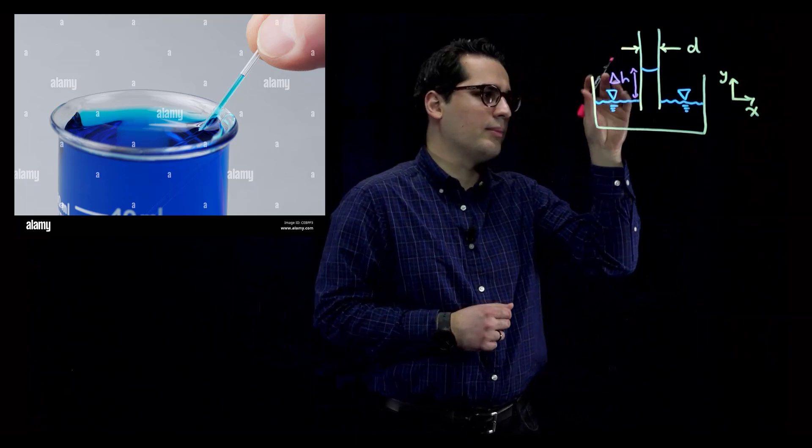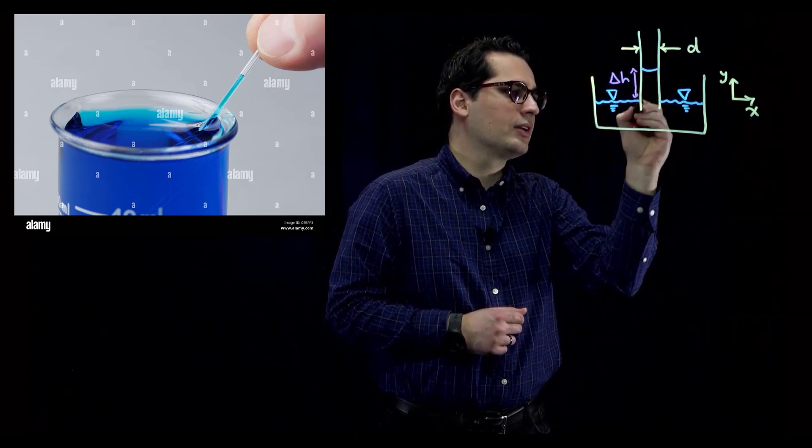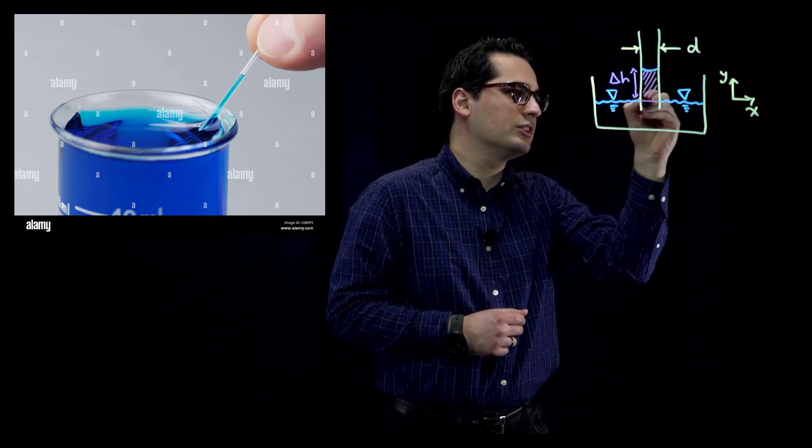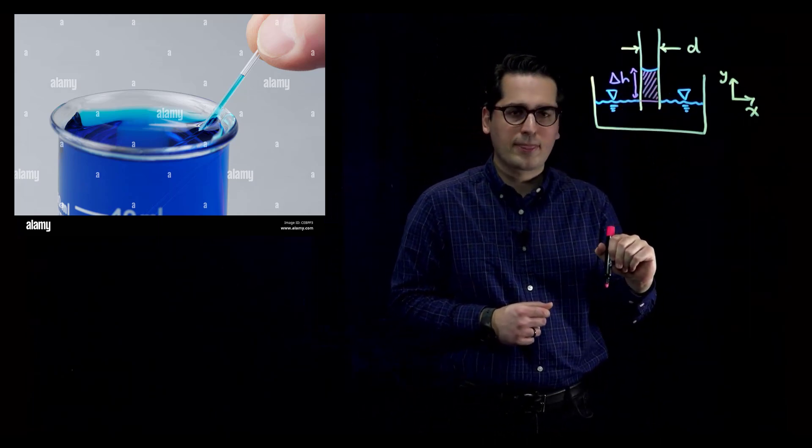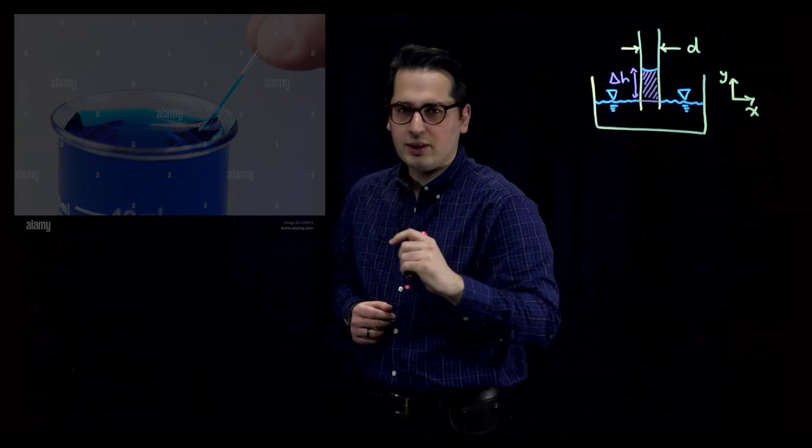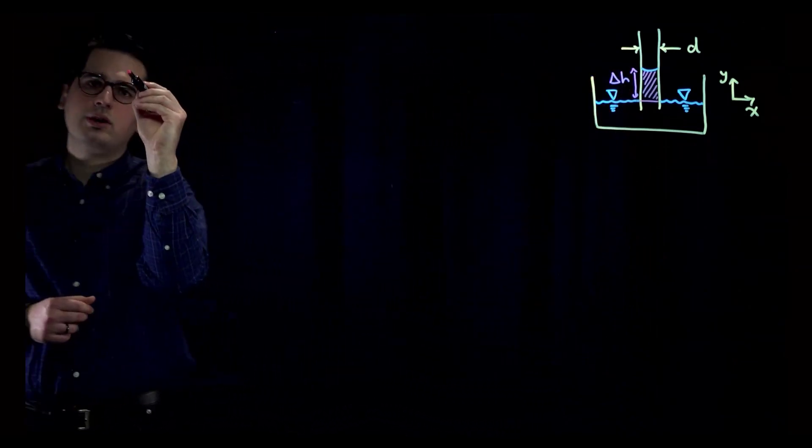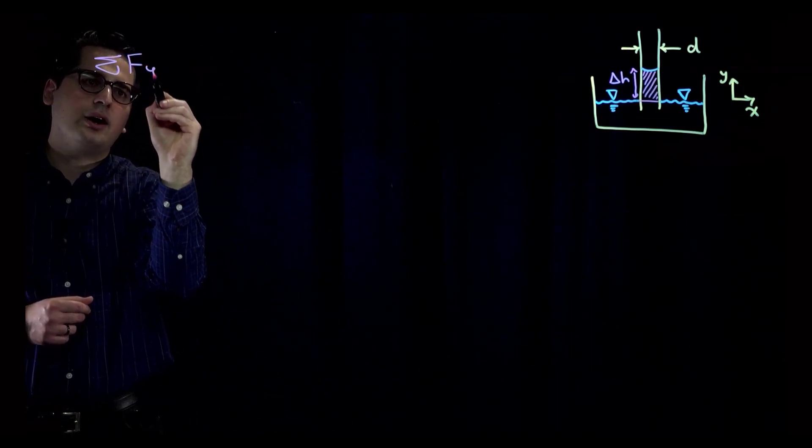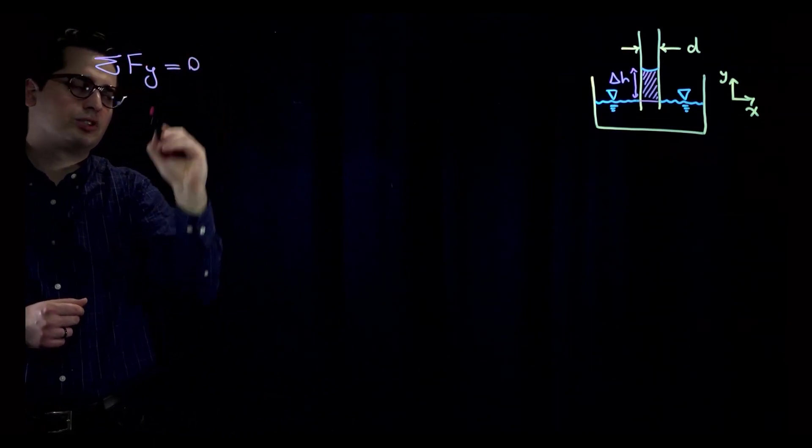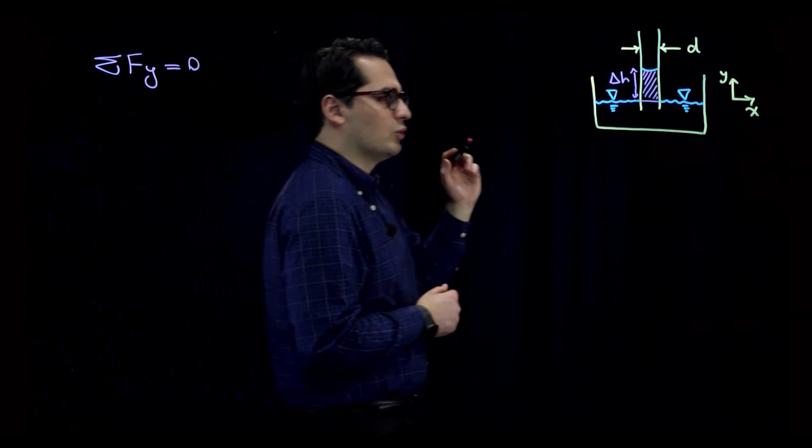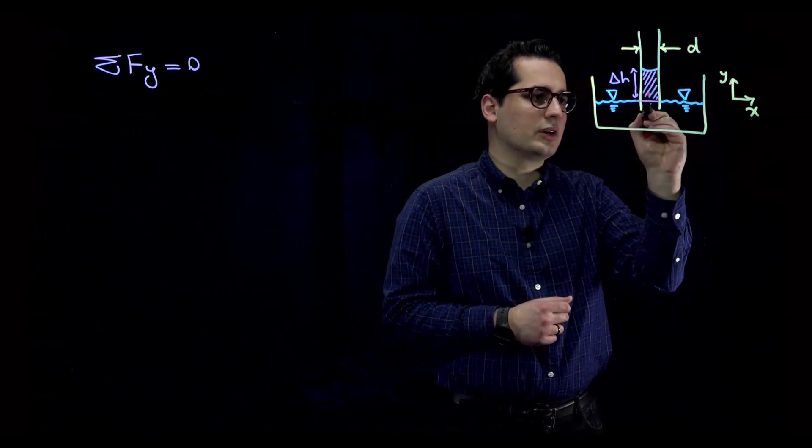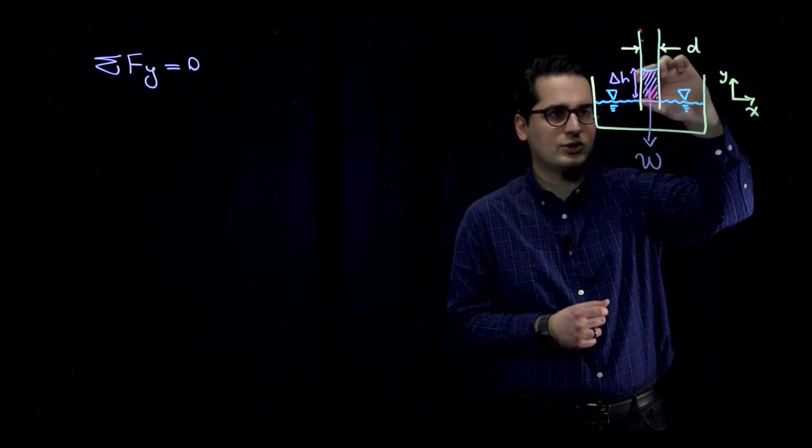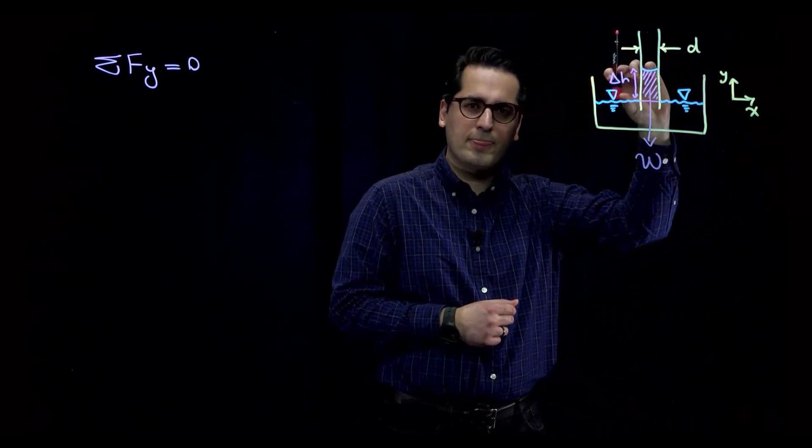So I'm going to define my system within this area which is inside the straw. This system is in equilibrium, right? So the summation of all the forces in Y direction should be equal to zero. What are the forces in Y direction? Well, the obvious one is going to be W, the weight of this cylindrical water.